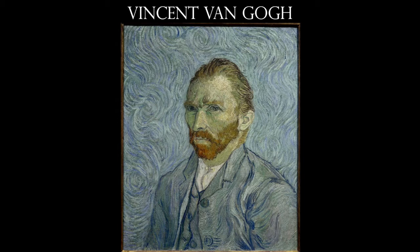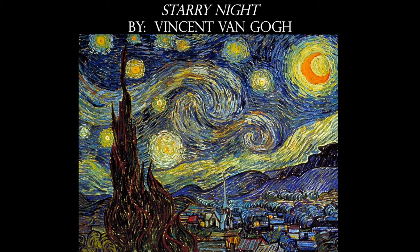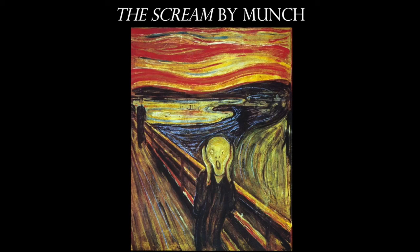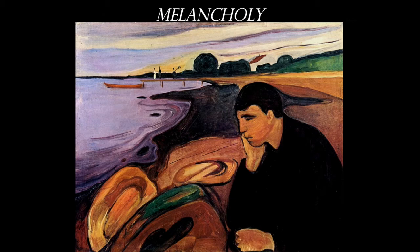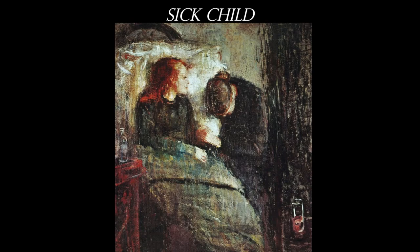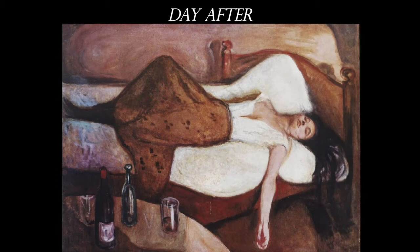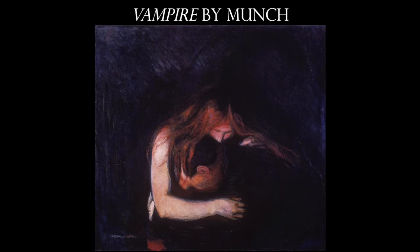Post-Impressionism is also where we find Vincent van Gogh — I have a completely separate lecture on him, so I won't spend time here. His most famous work is of course Starry Night. Edvard Munch, who created The Scream, falls into this category because of his expressionist use of color. He had a very sad and tragic life — many family members died very young, and he was always surrounded by death. Munch himself, however, lived into his 80s.